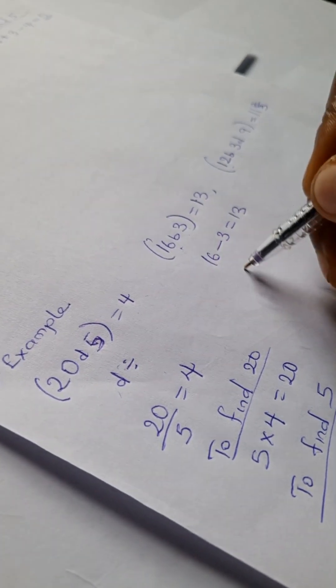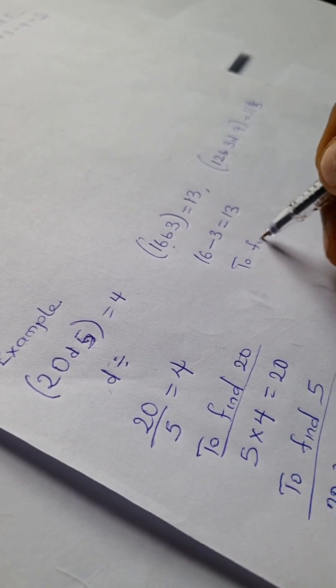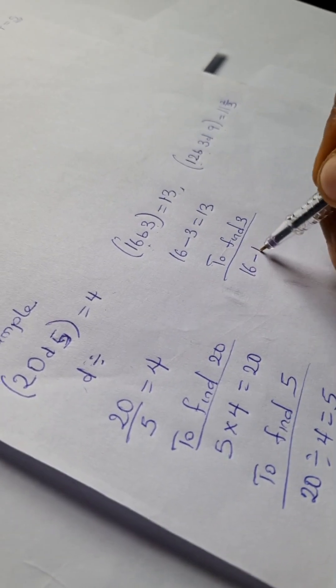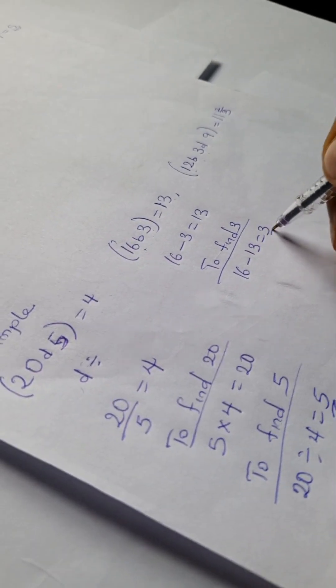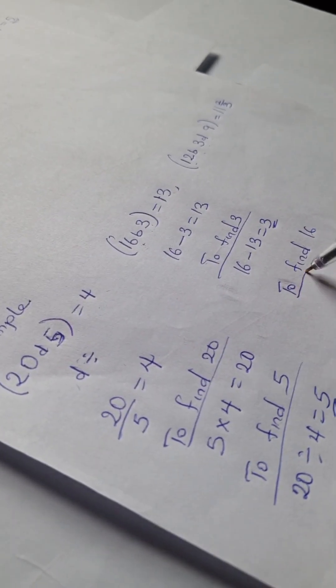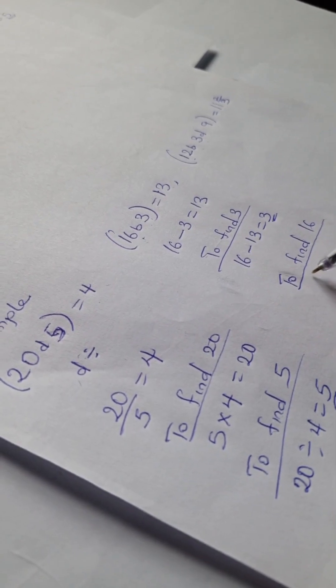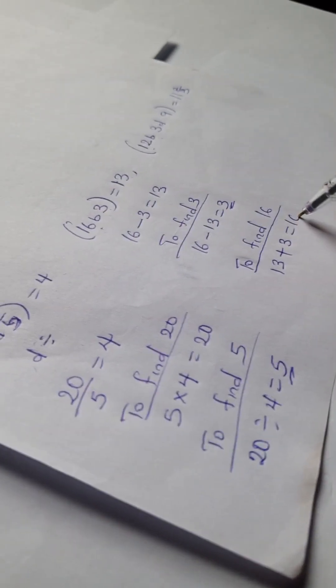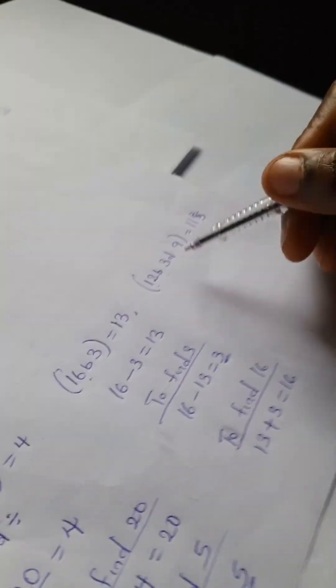And for 16 B 3, we are going to have 16 minus 3 equals 13. And to find 3 here, we're going to have 16 minus 13 equals 3. And to find 16, we're going to have 13 plus 3 equals 16.